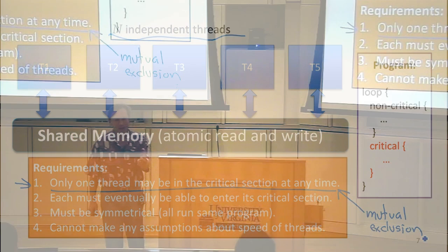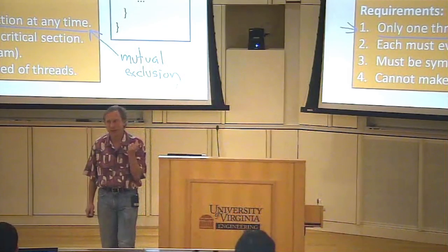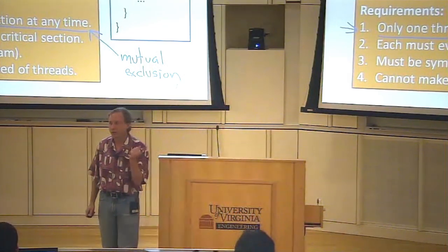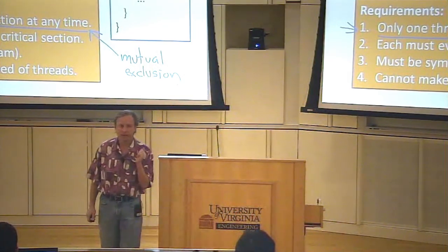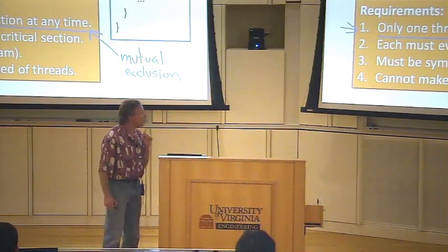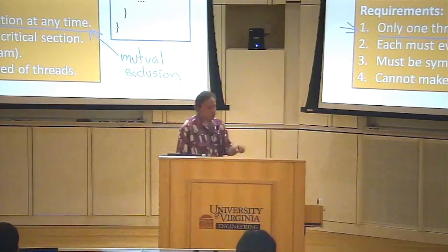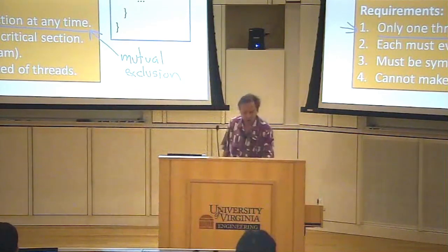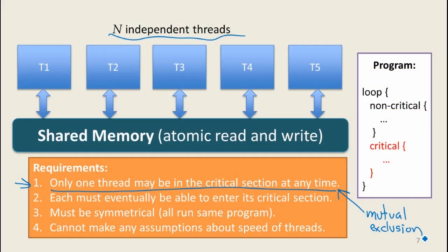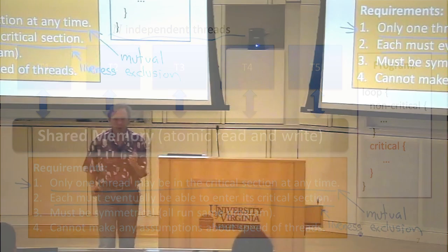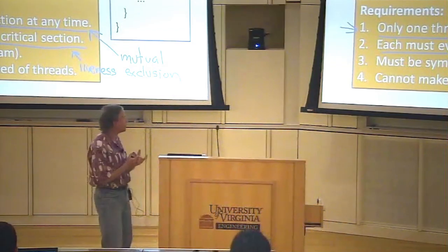If thread X is in the critical section, no other thread can be in that section. That's the safety property. We also have a liveness property that says they all must eventually make progress, and every thread must get some chance to enter its critical section. So those are the two key properties.